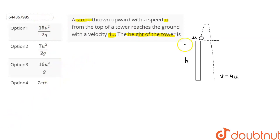Let's find out. Consider this diagram. This is a tower whose height is h. This stone is thrown vertically upwards with a velocity of u.